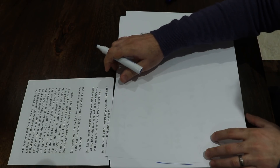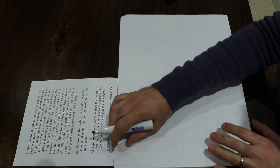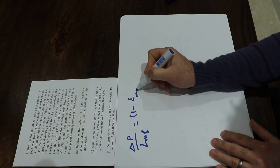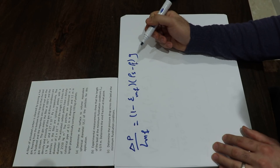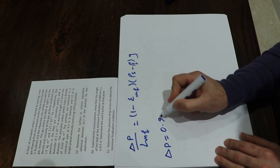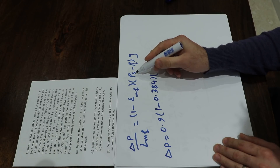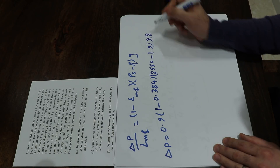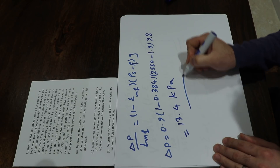For the third part, the pressure drop at minimum fluidization: the equation is delta P divided by L_MF equals (1 minus epsilon_MF) times (rho_s minus rho_f) times g. Substituting L_MF equal to 0.9, epsilon_MF equal to 0.384, rho_s equal to 2550, rho_f equal to 1.9, and g equal to 9.8, the pressure drop delta P calculates to 13.4 kilopascal. That's the solution to this question.